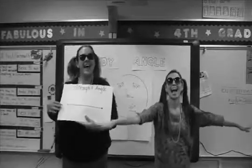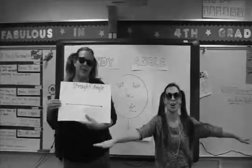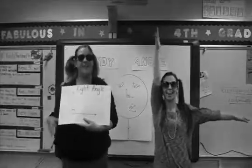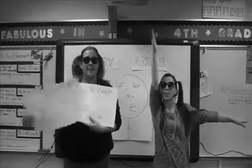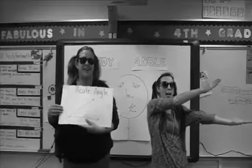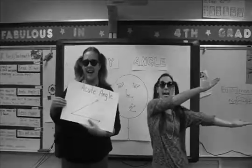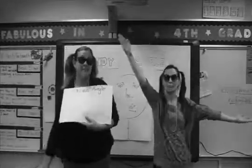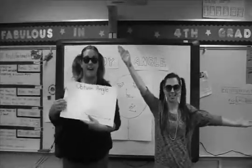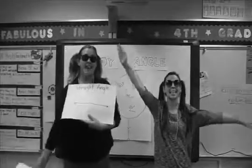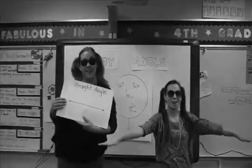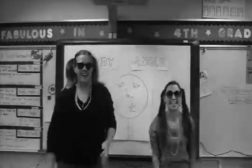And a straight angle is 180. Right angle — it is 90 degrees. Acute angle: less than 90 degrees. Obtuse angle: more than 90 degrees. And a straight angle is 180.